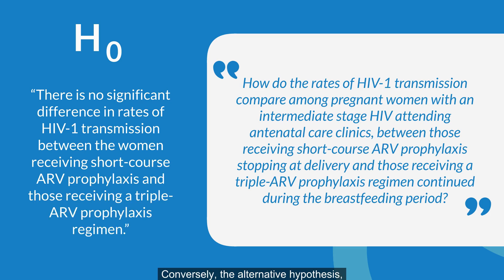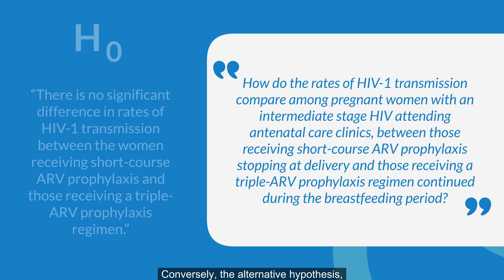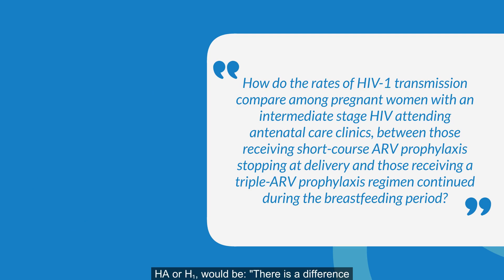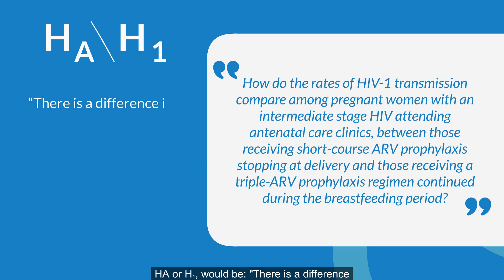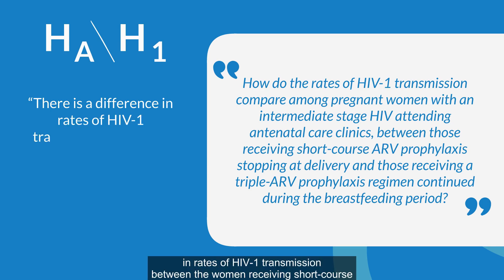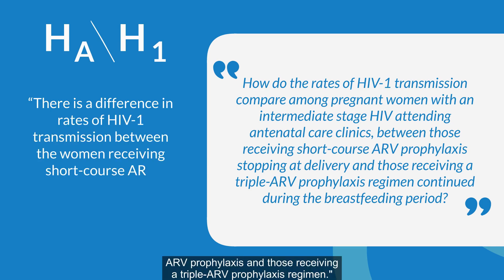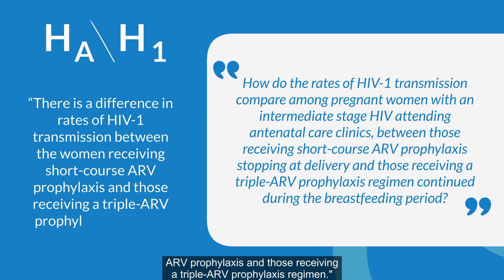Conversely, the alternative hypothesis, HA or H1, would be: There is a difference in rates of HIV-1 transmission between the women receiving short-course ARV prophylaxis and those receiving a triple ARV prophylaxis regimen.